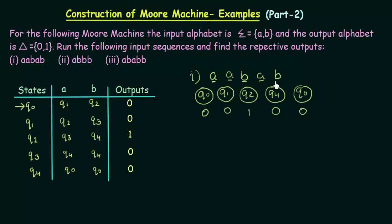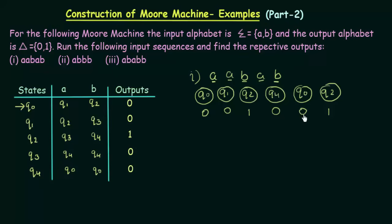In Q0 we get the input B. If Q0 gets B, it goes to Q2, and Q2 produces the output 1. So for the input sequence A, A, B, A, B, the output that we get is 0, 0, 1, 0, 0, 1.